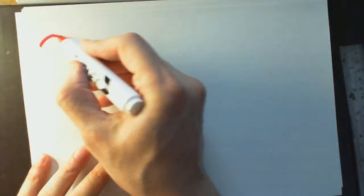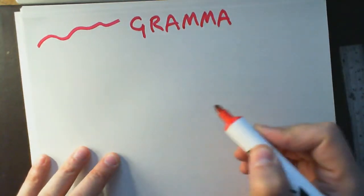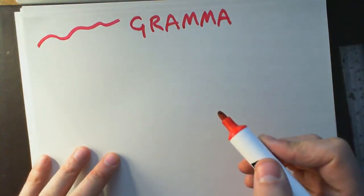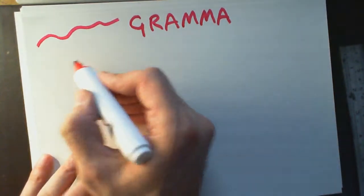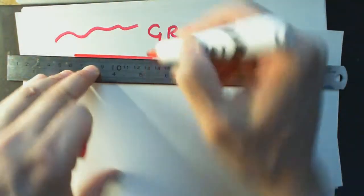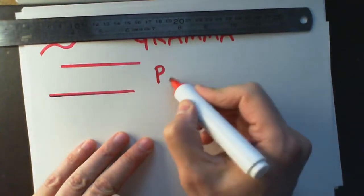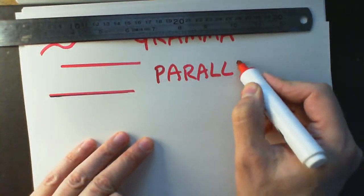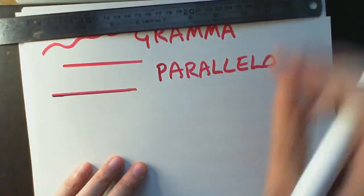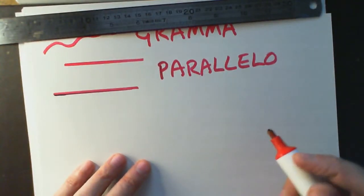Some more Greek. This is a line drawn with a pen. The word for a line drawn with a pen in Greek is 'gramma'. 'Parallelo' means with parallel. And if I make a shape that's with parallel drawn with a pen, then I get a parallelogram.